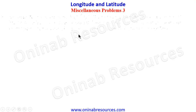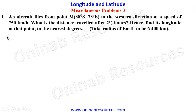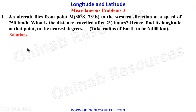We start with Problem 1. An aircraft flies from point M at 38 degrees South, 73 degrees East, in the western direction at a speed of 750 kilometers per hour. What is the distance traveled after two and a half hours? Hence find its longitude at that point to the nearest degree. Take the radius of the Earth to be 6400 kilometers.